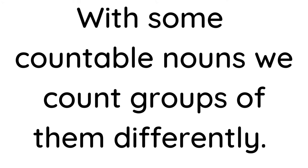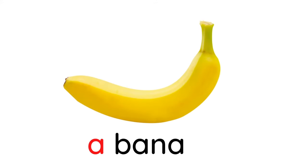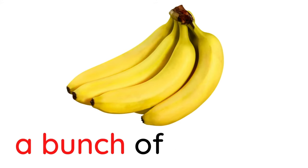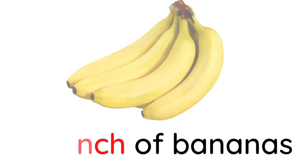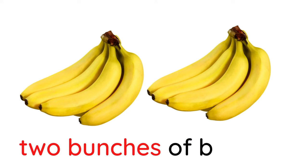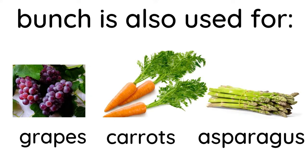With some countable nouns, we count groups of them differently. A banana. A bunch of bananas. Two bunches of bananas. Bunch is also used for grapes, carrots, and asparagus.